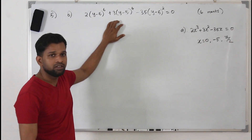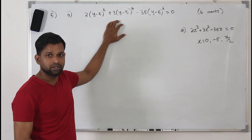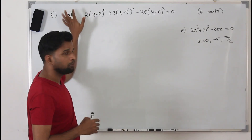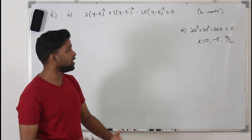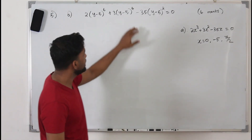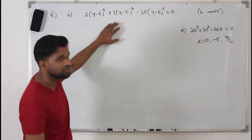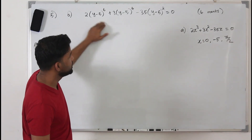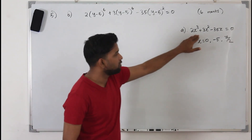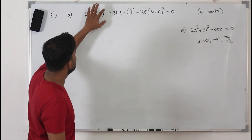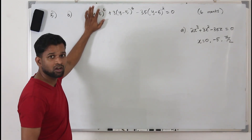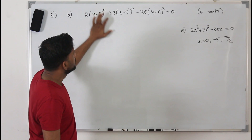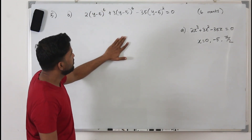When you compare the two equations, Part B has something to do with Part A. You can rearrange the Part B equation into the Part A form by taking some expression — maybe called X, Y, or U — as a substitution variable.